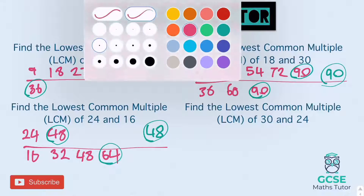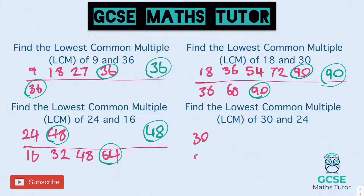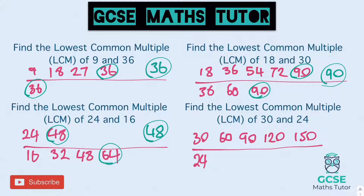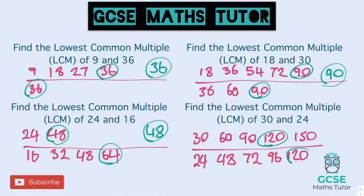And on to the last one: 30 and 24. So 30: 60, 90, 120, 150 — all ending in zeros. For 24, we've already done that, so we know the first one is 48, then 72, 96, 120. There we go — so there's our lowest common multiple, 120. And that's those done.